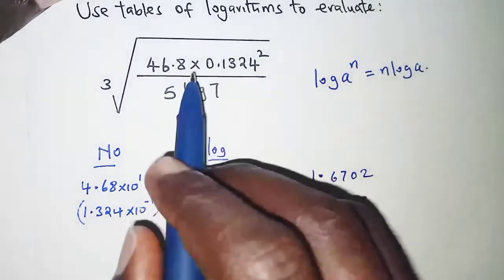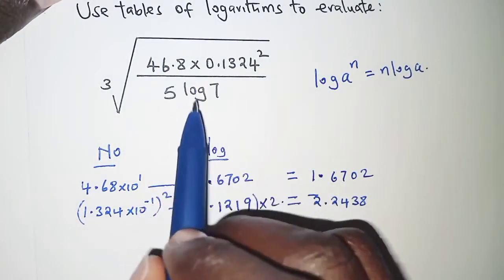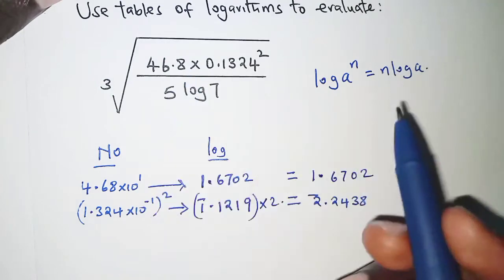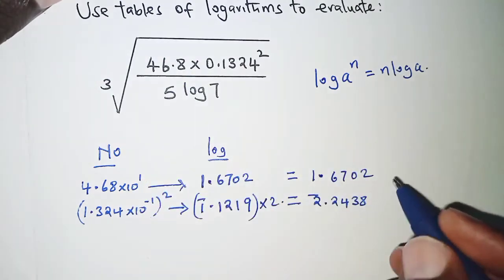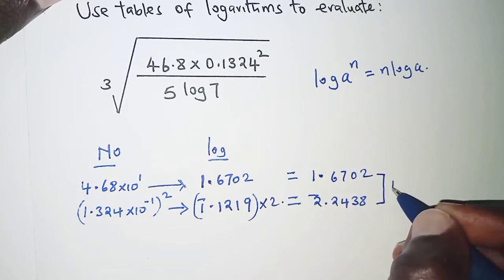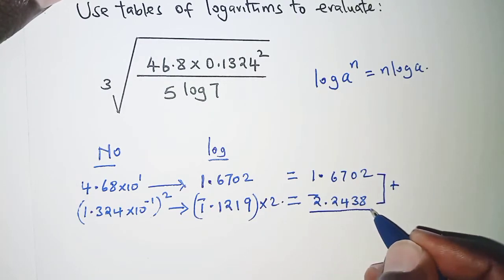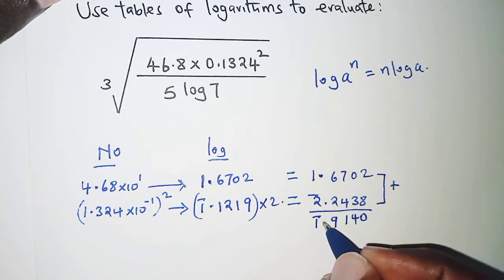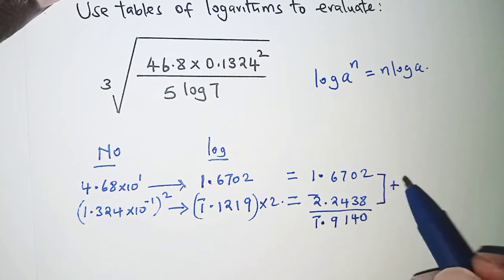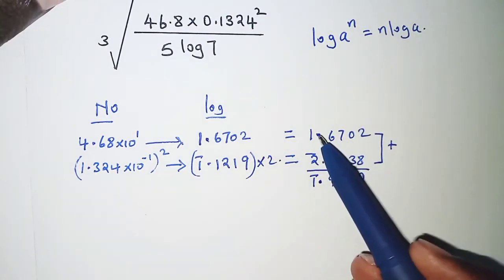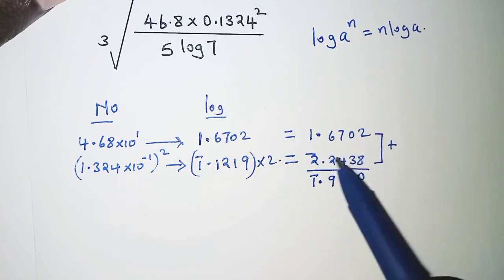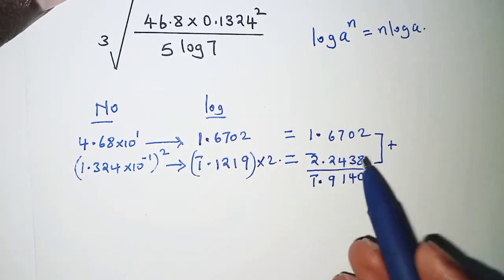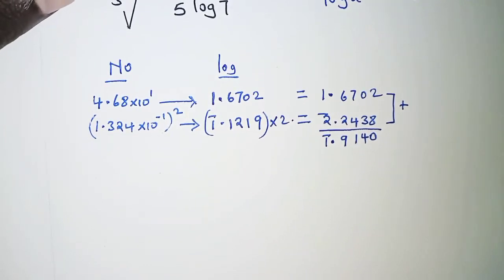On the numerator we were multiplying, and by laws of logarithm, multiplication would imply addition of logarithms. So we add the logs and this will be 1.9140.